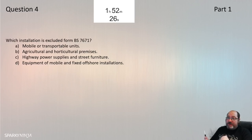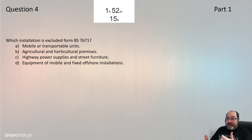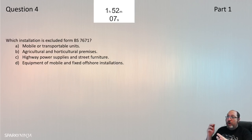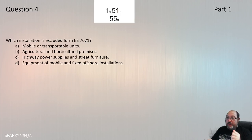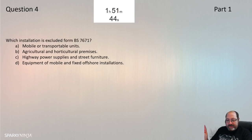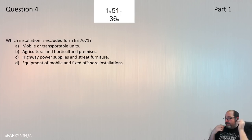Question 4: Which installation is excluded from BS 7671? The exclusive scope is at 110.2. We know from Part 7 that mobile or transportable units, agricultural/horticultural premises, and highway power supplies are all included in BS 7671. Offshore installations — mobile and fixed — appear at 110.2 as excluded from scope. Question 4 is D.